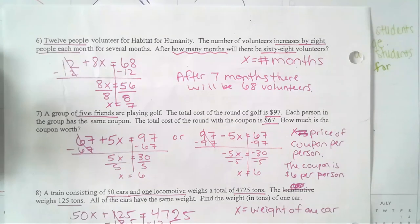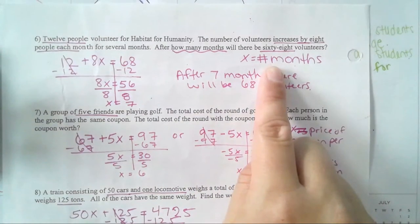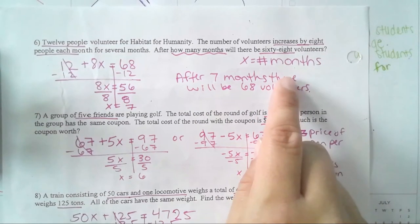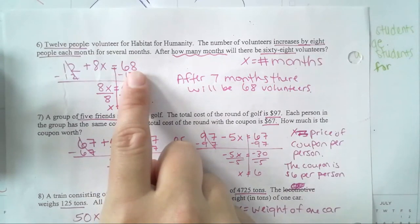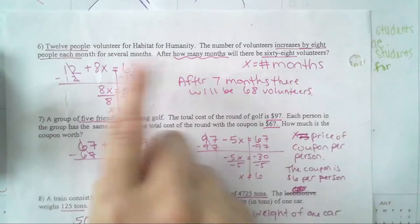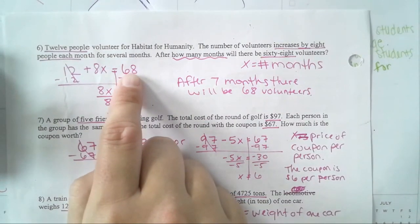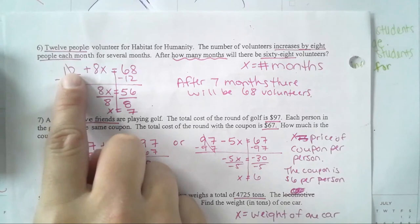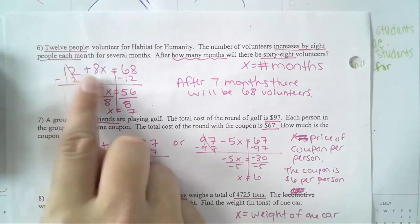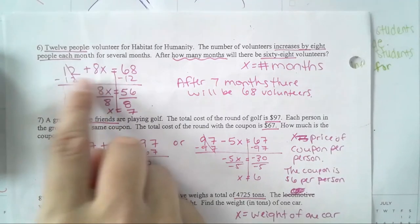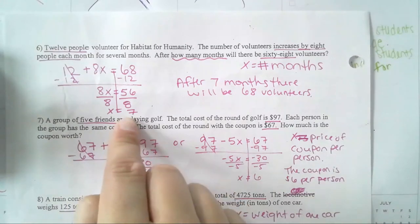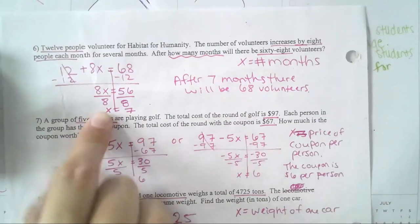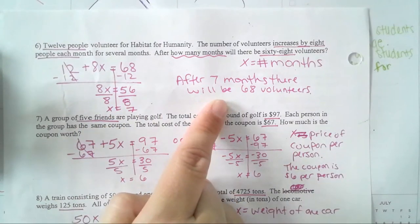So you should be done with three of them now. For the first one, you're figuring out the number of months, so X equals number of months. Your total was 68 volunteers. Volunteers increased by 8 people each month, so 8 was attached with X. You already had 12 people, so: 8X plus 12 equals 68. After solving — subtract 12, divide by 8 — you should have gotten 7 months.